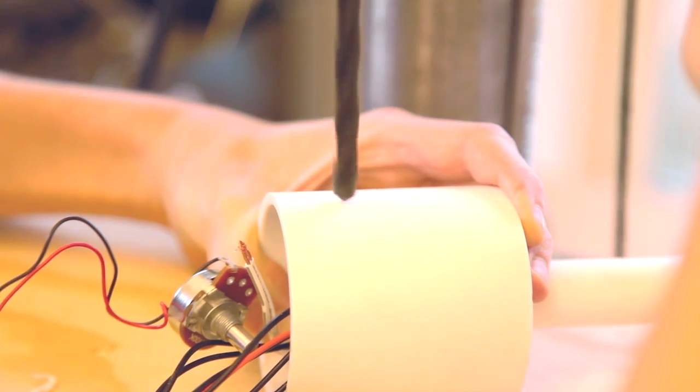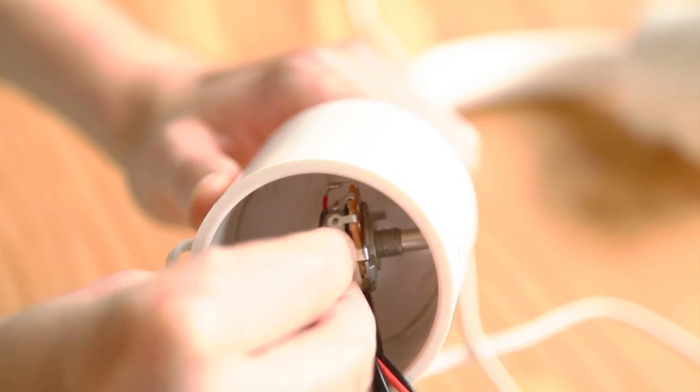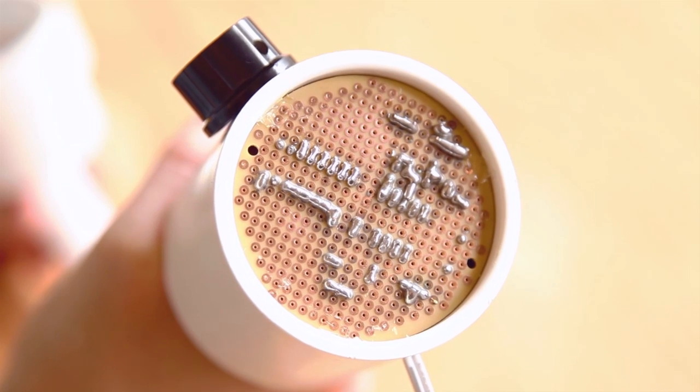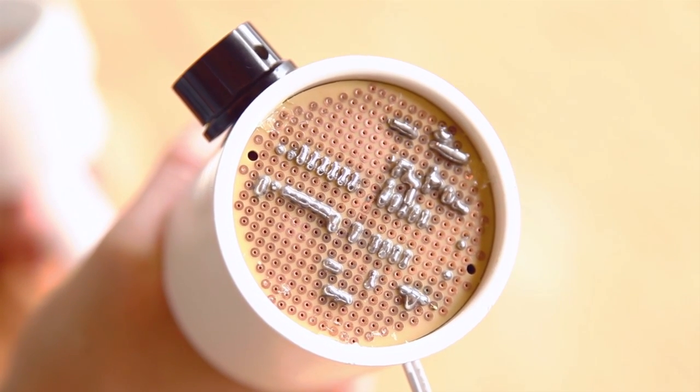Drill a hole for the potentiometer shaft, then insert the shaft, mark where the tab goes, and drill a small hole for the tab. Mount the circuit in the base of the lamp using a few dabs of epoxy.